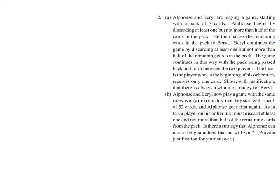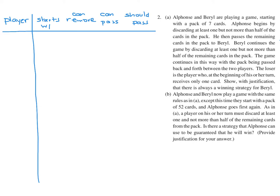Part B: Alphonse and Beryl now play with 52 cards, same rules. Alphonse goes first again. Is there a strategy Alphonse can use to guarantee he wins? We'll build the same kind of table. Alphonse starts with 52 cards and can remove anywhere from 1 to 26.